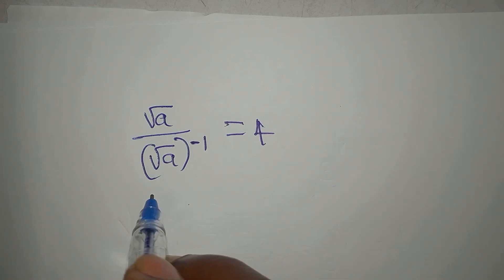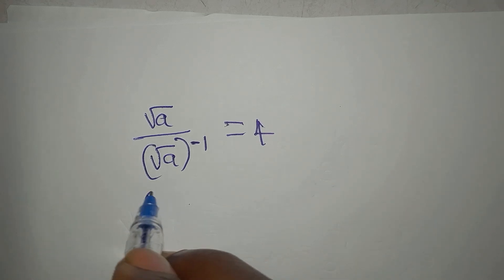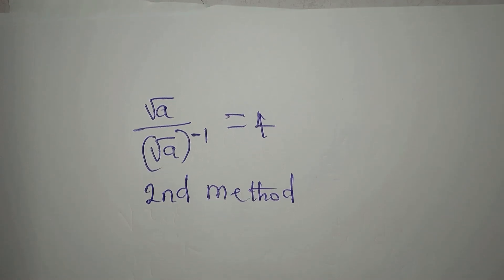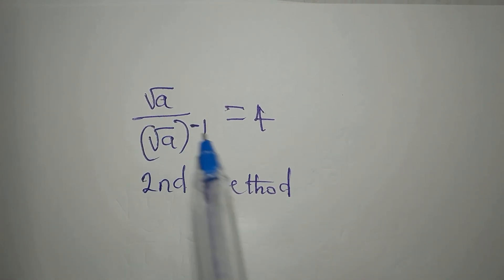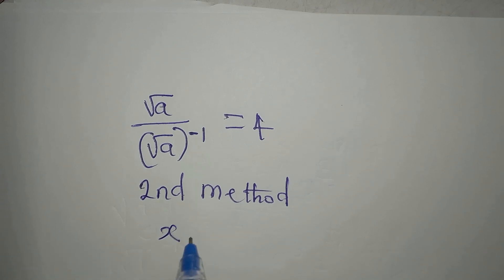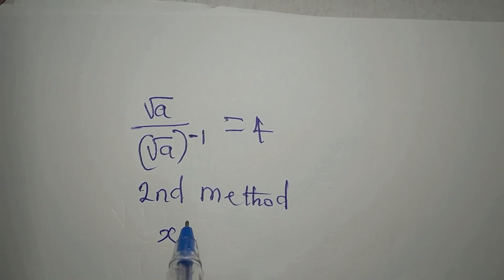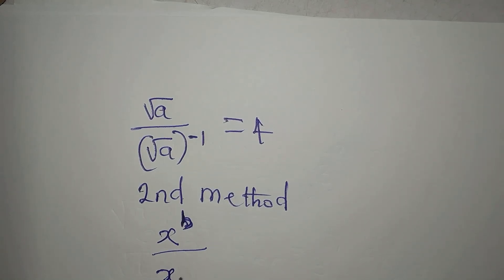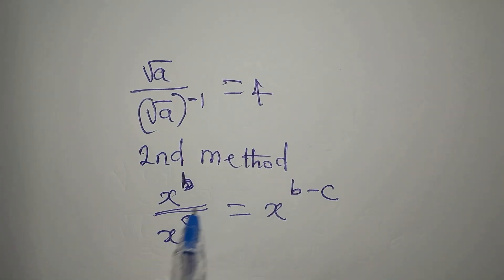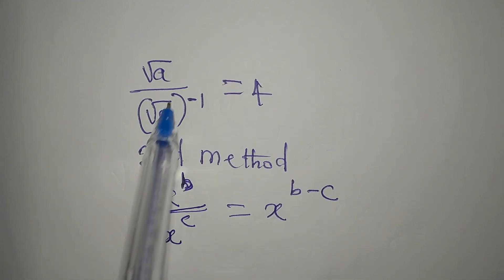This is the equation and we are looking at the second method. For the second method we will apply another law of indices. If you have x to the power of b over x to the power of c, this is the same as x to the power of b minus c, because of the division. I'm going to apply the same thing to this equation.